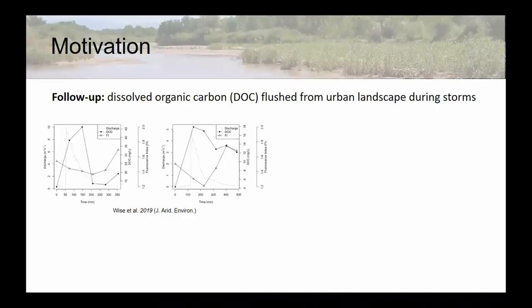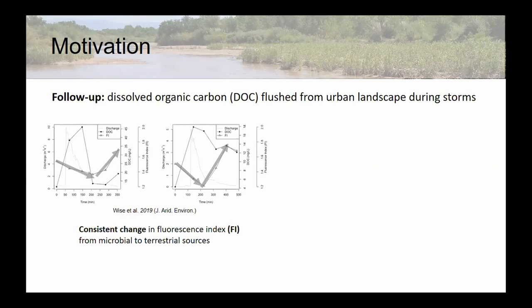The motivation for this study: we're following up on some really interesting work from Julia Wise. She worked at UNM and collected a lot of DOC — dissolved organic carbon — samples coming through the north diversion channel, draining off of the Albuquerque urban landscape. She was looking at how concentrations change and how DOC quality changes. We have two storms here with concentration data showing it increases during the storm pulse. We also have this fluorescence index (Fi), which is a general indication of the quality of the DOM, showing a consistent pattern through each storm — the transition between microbial and terrestrial sources.